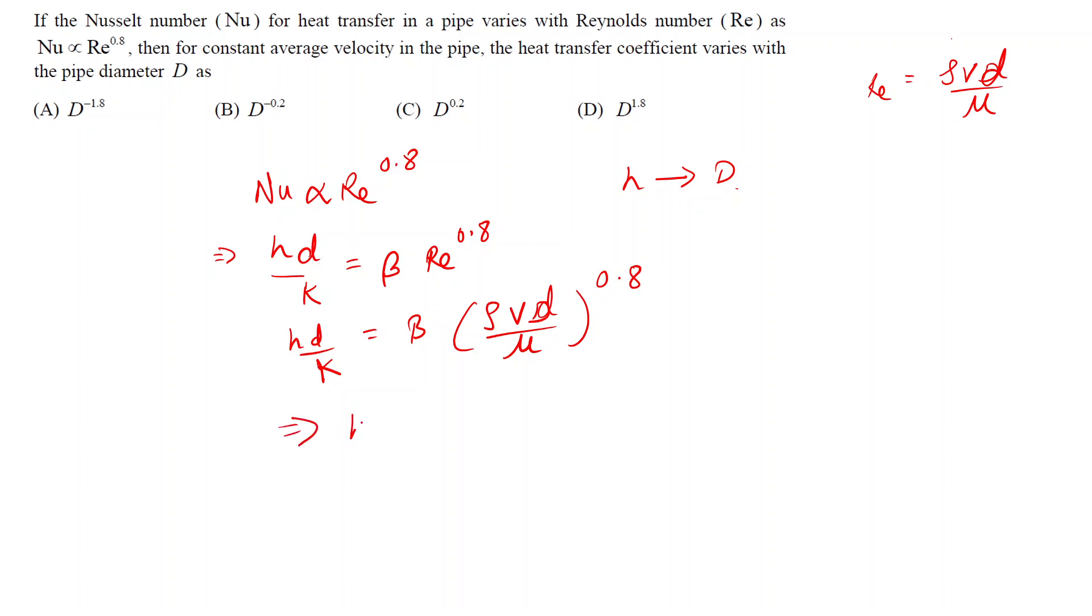We can write H is equal to beta times K upon D times rho V D upon mu raised to 0.8. Now density will remain constant, this velocity is also constant average velocity as given in the question, and mu will also remain constant. So let's club all these constant terms and the new constant will become beta dash.